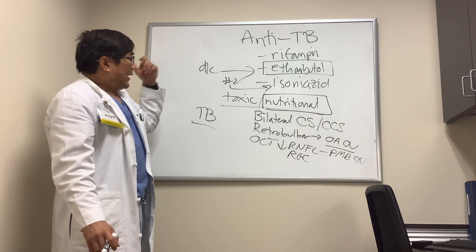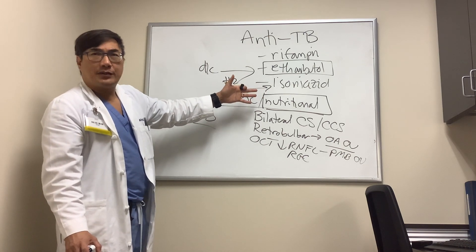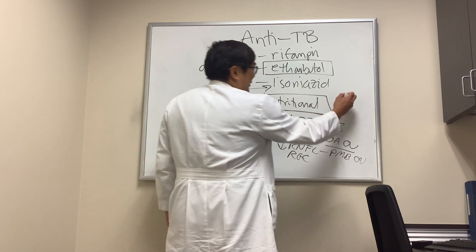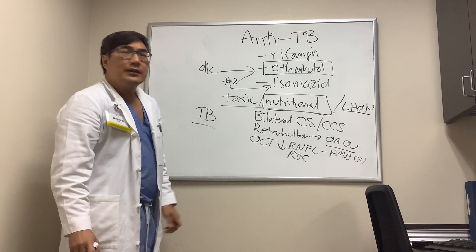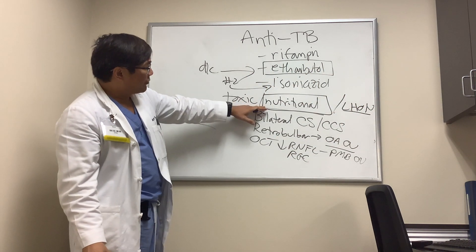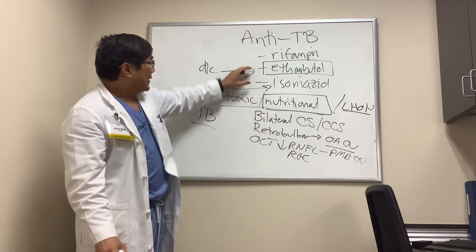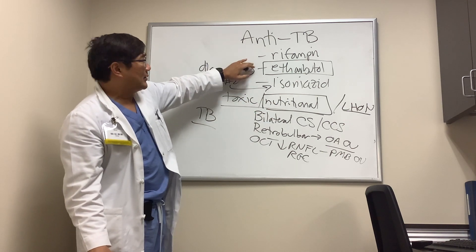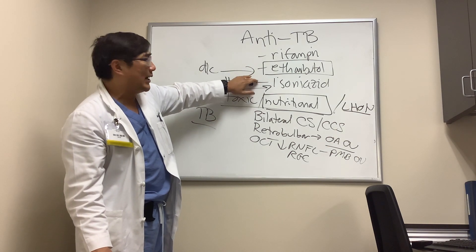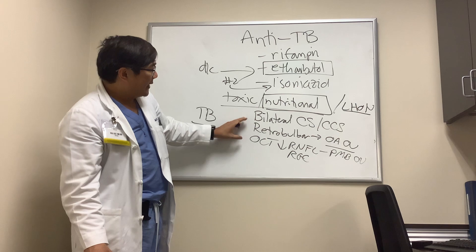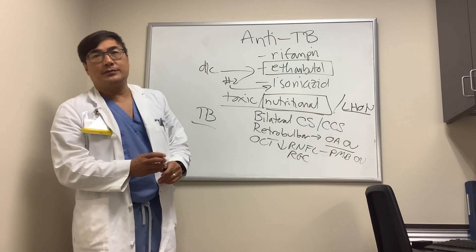Also consider B12, copper deficiency if there's some reason for it, and hereditary causes — specifically Leber hereditary optic neuropathy. So I'm always thinking about nutritional and toxic causes the same way. The two toxins in tuberculosis treatment are ethambutol number one and isoniazid number two. Rifampin is not a significant cause. If there is progression, think about nutritional deficiency and Leber hereditary optic neuropathy.